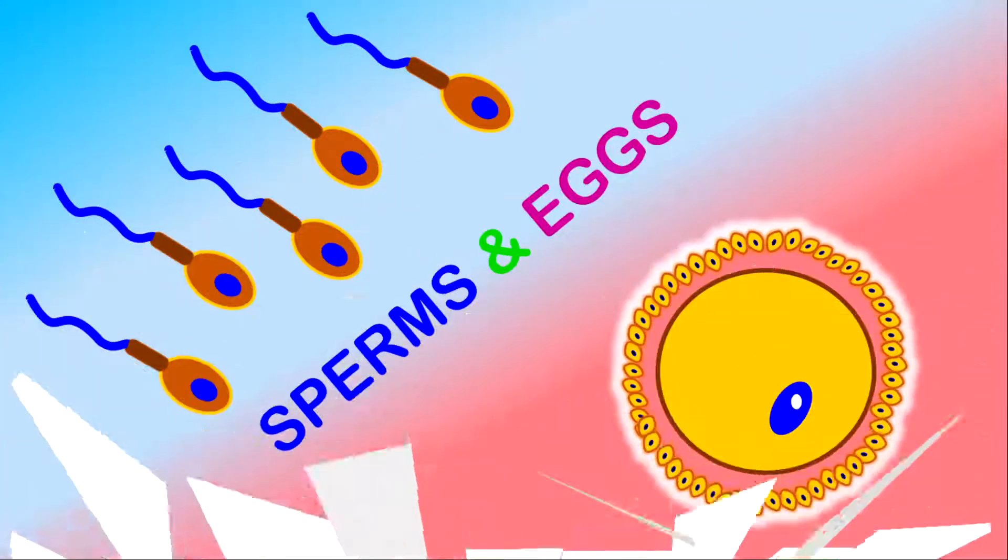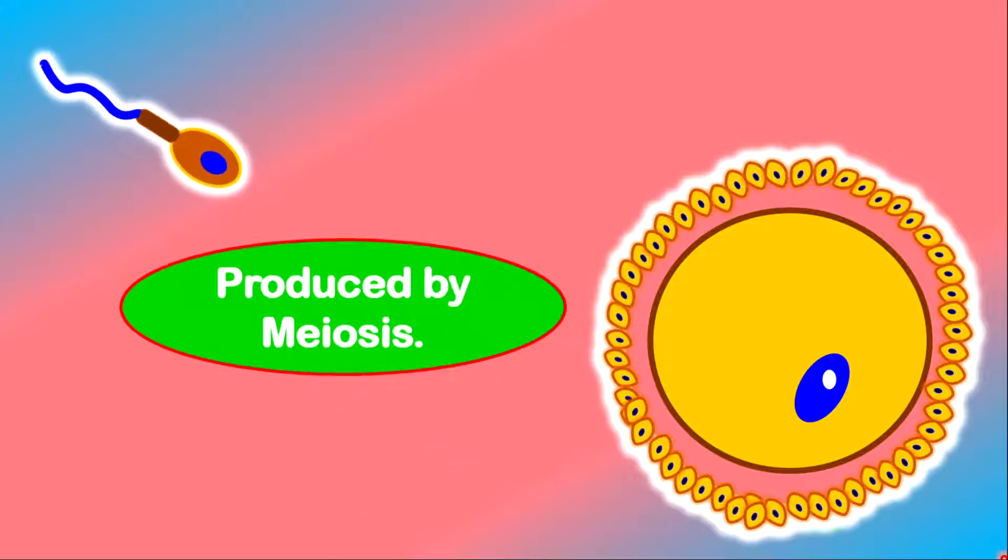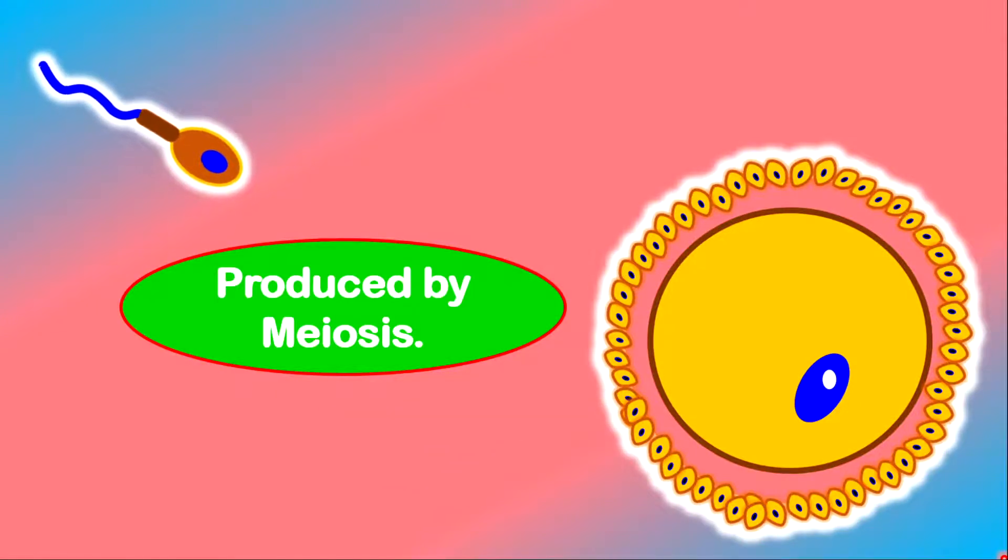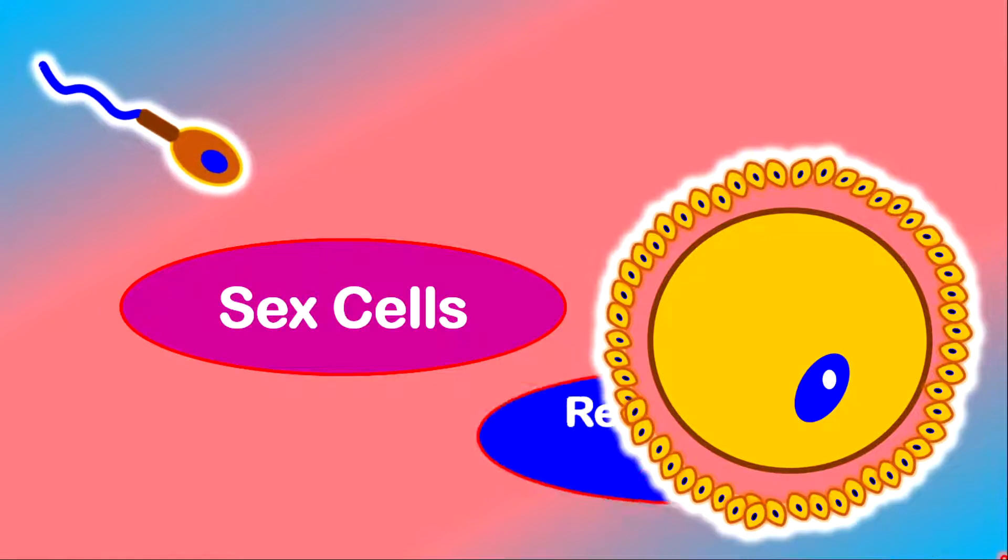Today, we are going to look at sperms and eggs. Well, not chicken eggs, but human eggs. Sperms and eggs are produced by meiosis. Sperms and eggs are called gametes. They can also be called sex cells or reproductive cells.